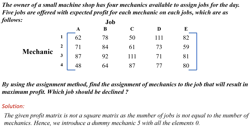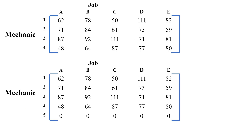Here five jobs A, B, C, D, E and four mechanics 1, 2, 3, 4 are given. The number of rows is 4 and number of columns is 5, so the given profit matrix is not a square matrix as the number of jobs is not equal to the number of mechanics. Hence we have to introduce a dummy mechanic 5 with all elements equal to 0, adding a dummy row with zero profit. Now the profit matrix is square and balanced.